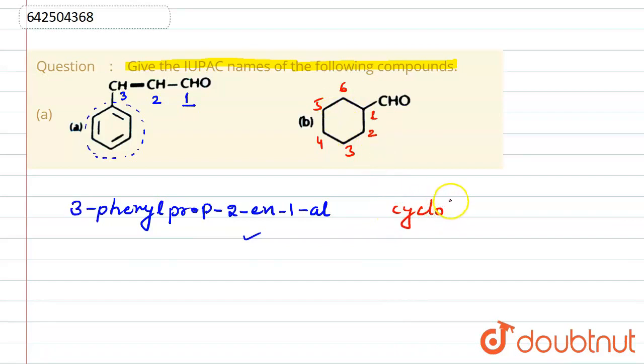And 6 carbons are there. So, hexane. There is no double bond—oh sorry, double bond is there. Yes, exactly. So -ane will not be there. Only -ene is there.